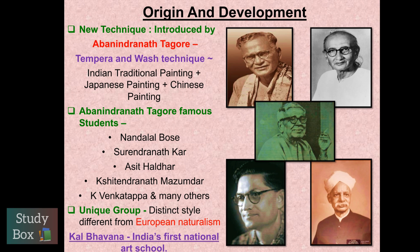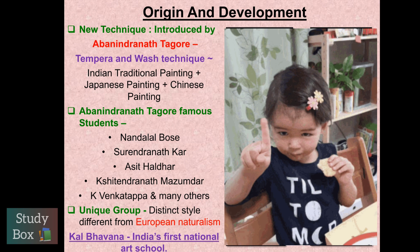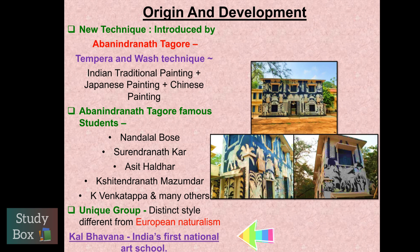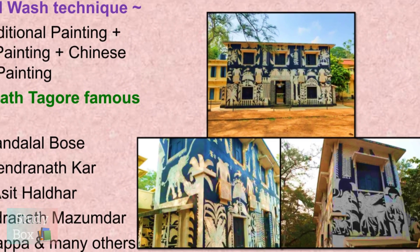The group was called a distinct style, different from European naturalism. They had this unique technique from Abanindranath Tagore and other students - it was unique because they didn't simply copy it; the technique evolved. As an extra point to remember: Kala Bhavana is India's first national arts school.